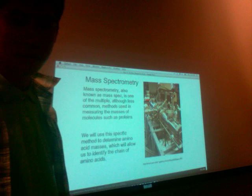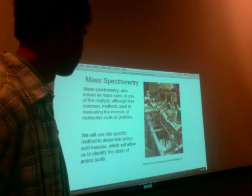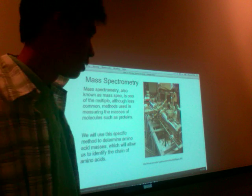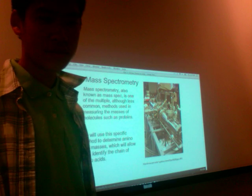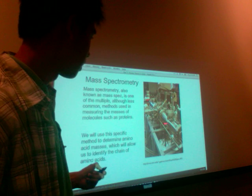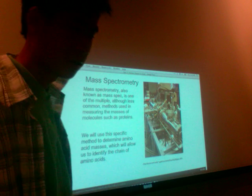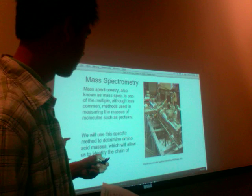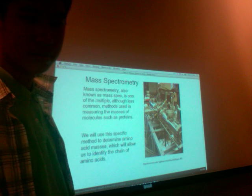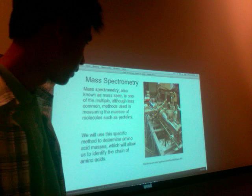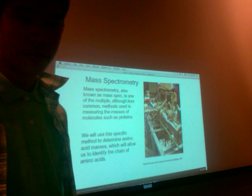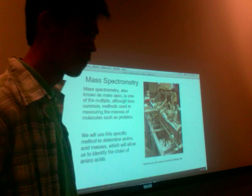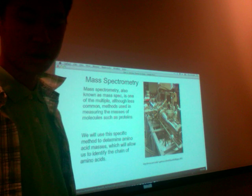Mass spec is our method of beginning to turn the protein into a gene code. Mass spec is basically using this metal tube you see in the picture, and we're going to shoot fragments of the protein through the tube. The computer will read where each molecule lands, and through some complex algorithms, determine the order of the amino acids by mass-to-charge ratios.